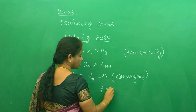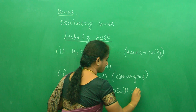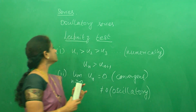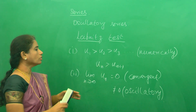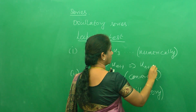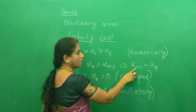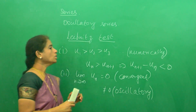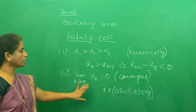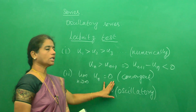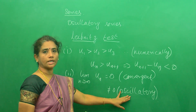If the limit is not equal to 0, according to Leibniz test the series is oscillatory. So there are two steps: one is checking un greater than un+1, and for that we compute un+1 minus un and check whether it is less than 0. The second step is the limit as n tends to infinity of un. If it is 0 the series is convergent; any other number, positive, negative, infinity, or whatever — the series is oscillatory.